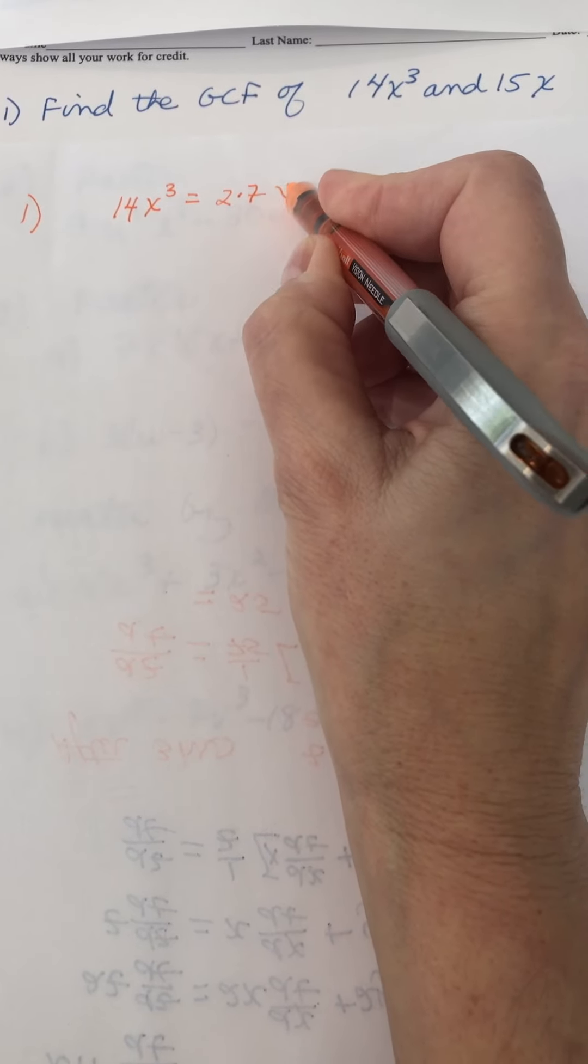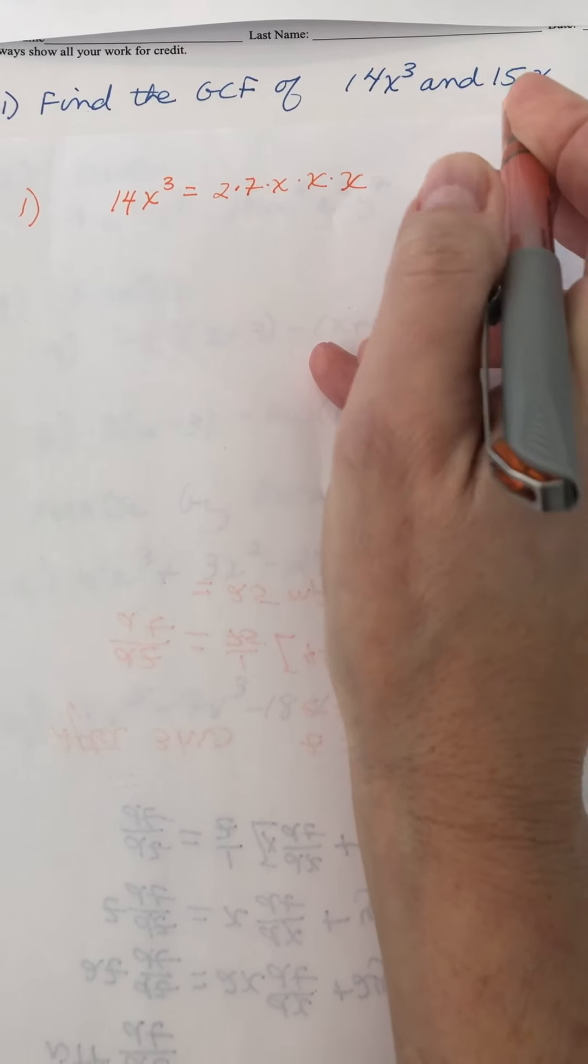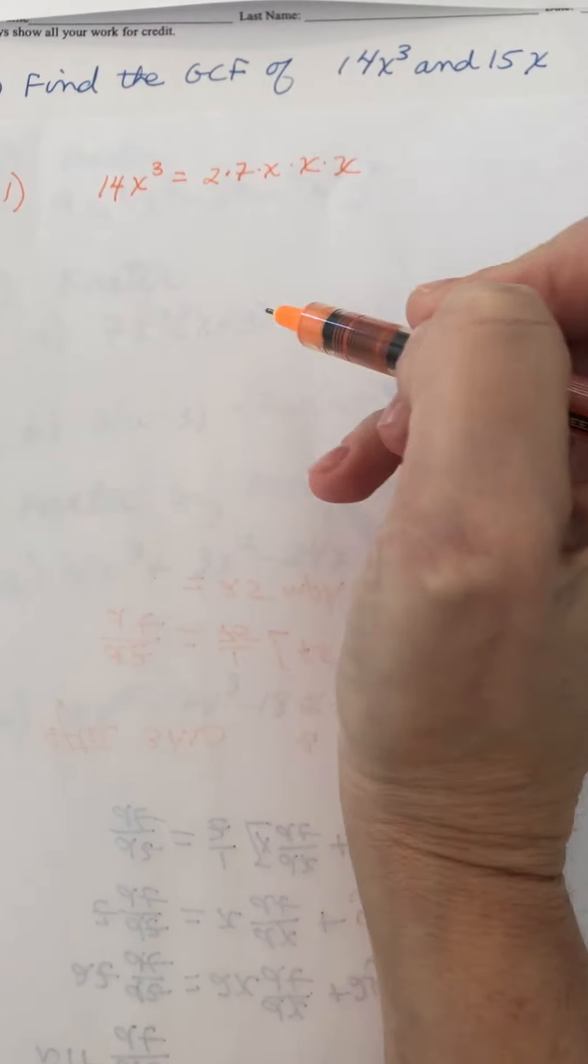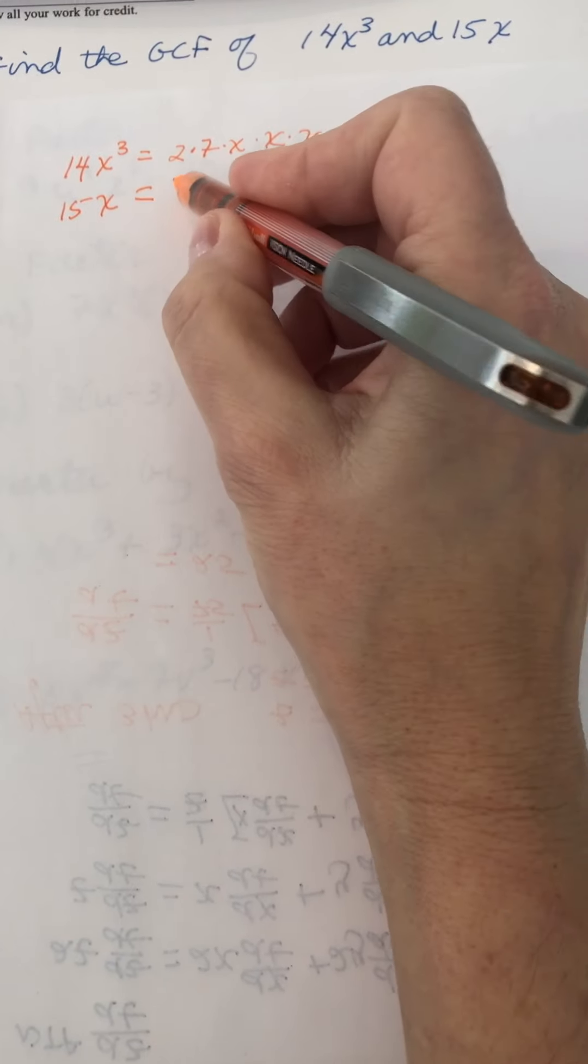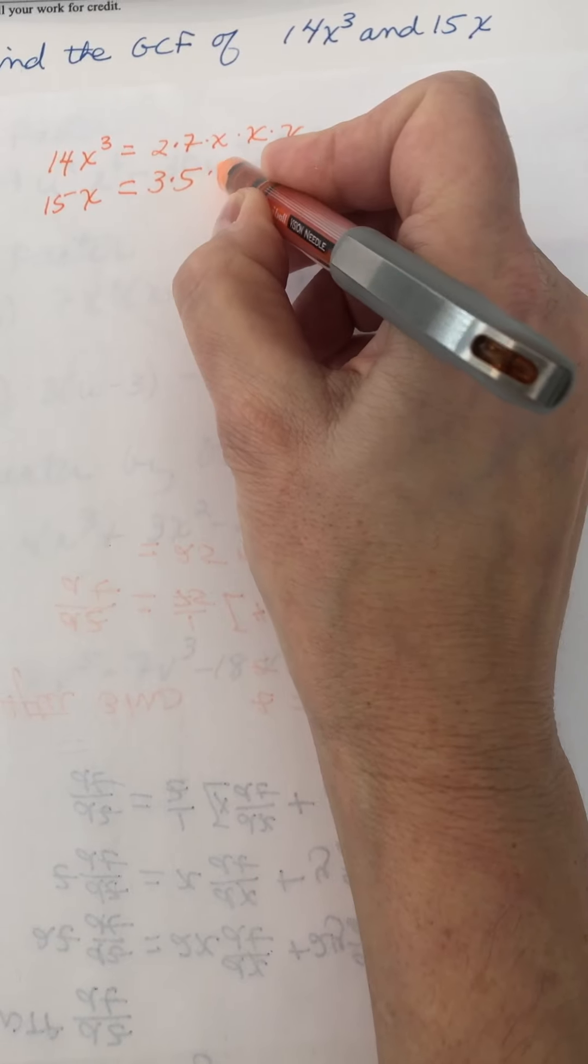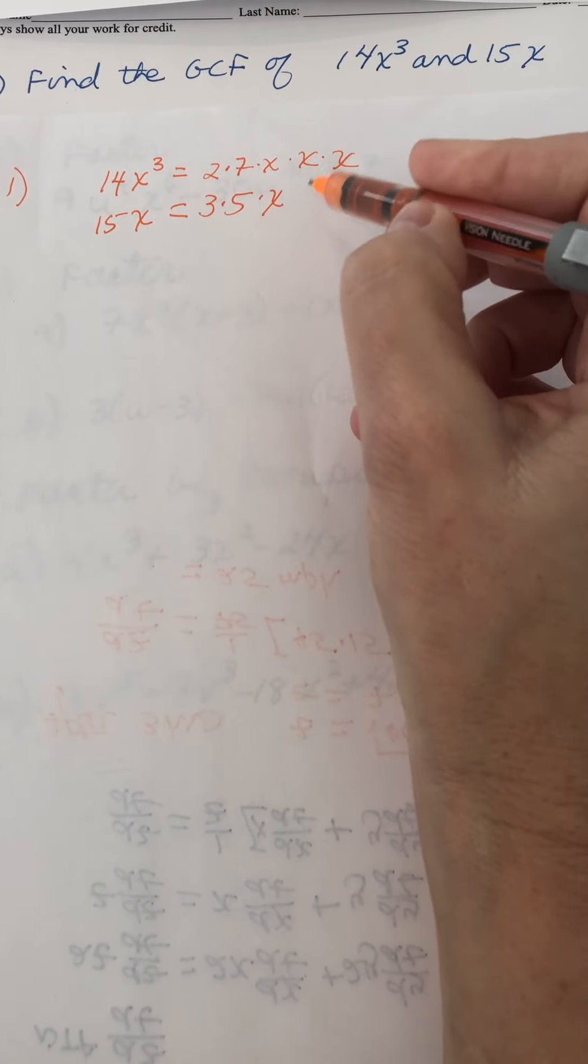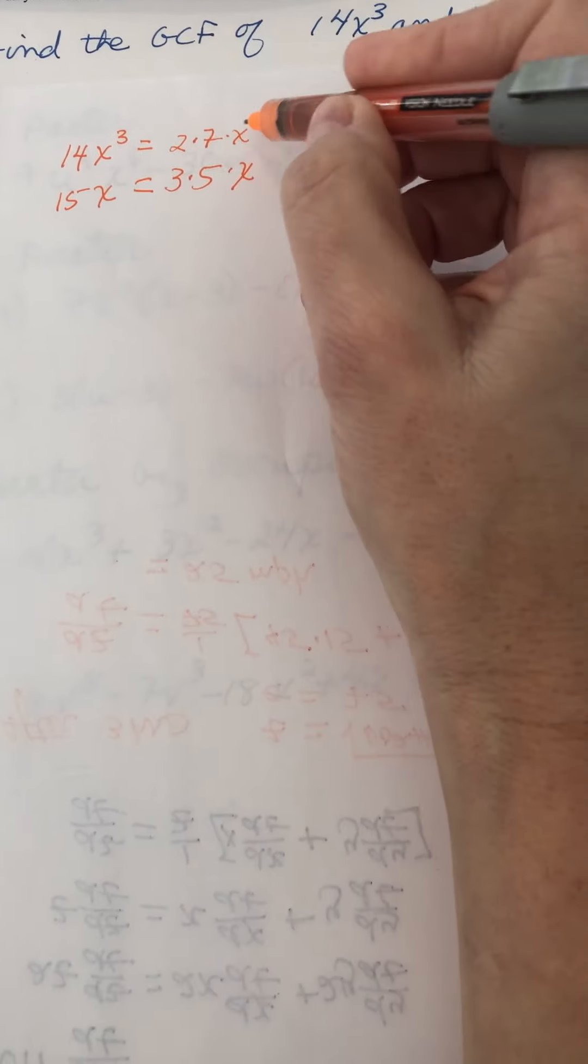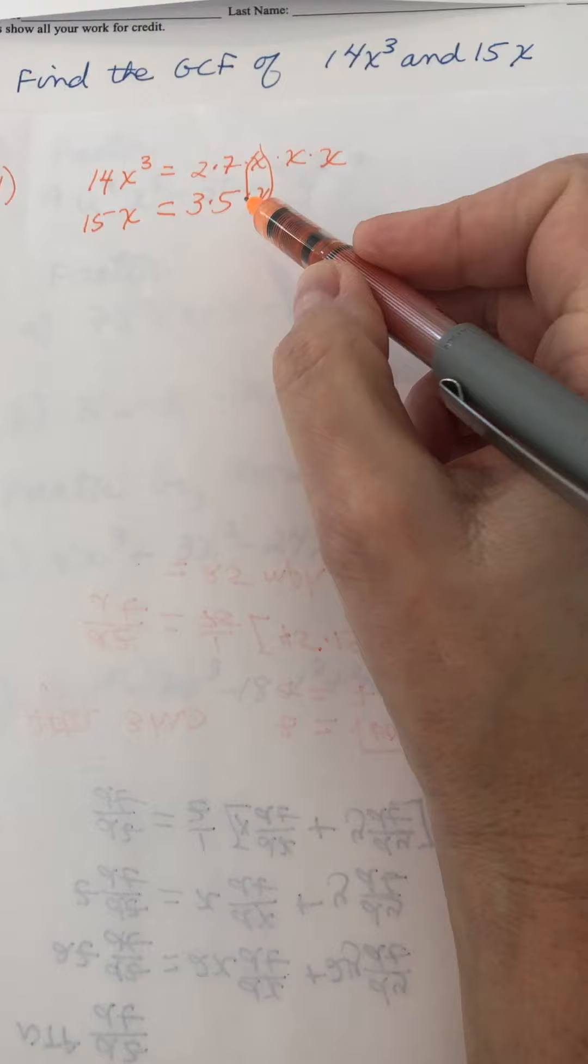And then the variable - that means that there are three factors of x. For the next one, 15x, the number 15 has factors of 3 and 5, and then there's one factor of x. You're looking for all of the factors in common, and for this one, the only thing in common is x.